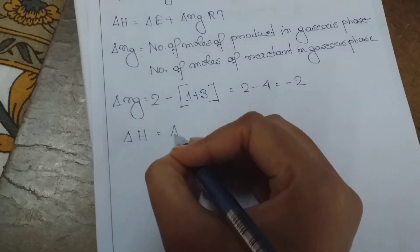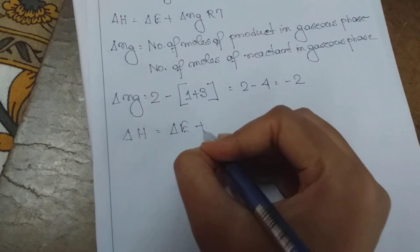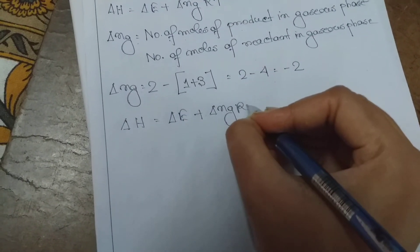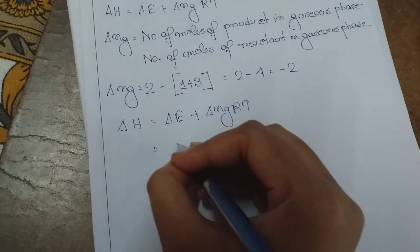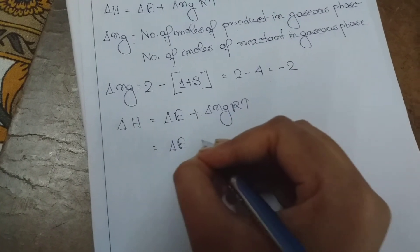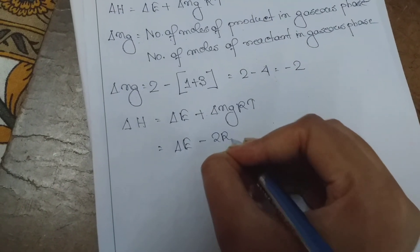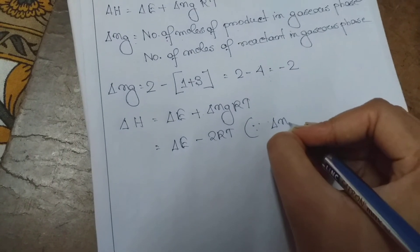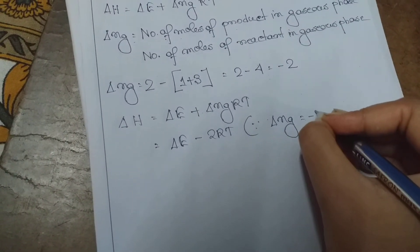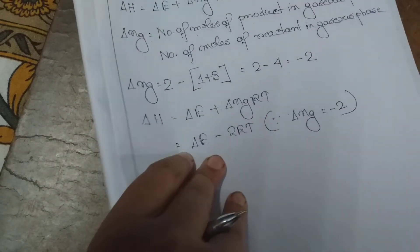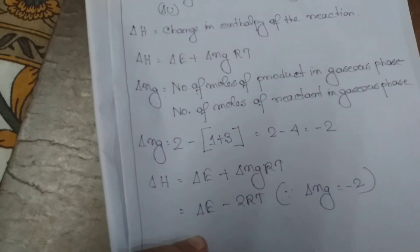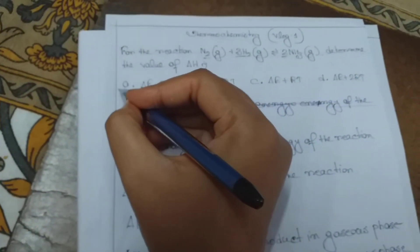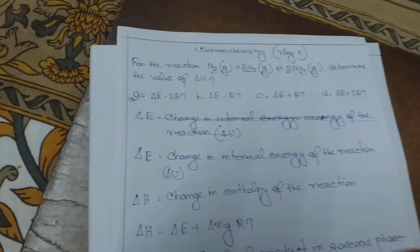So delta H equals delta E plus delta Ng times RT. Substituting delta Ng equals minus 2: delta H equals delta E minus 2RT. Therefore option A is correct.